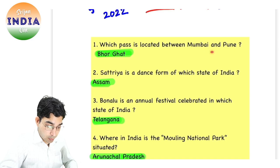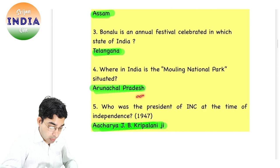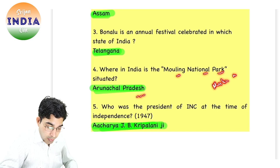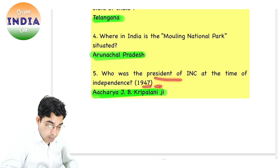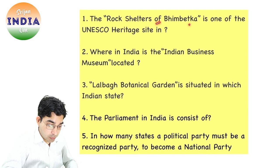Rappertji के yesterday questions के answers हैं. Mumbai and Pune के बीच में है भोर घाट. सत्रिया डांस फॉर्म है असम का. तेलंगाना का है बोनालू एन्वल फेस्टिवल. अरुणाचल प्रदेश में है मॉलिंग नेशनल पार्क. 1947 में जब आजाद हुआ इंडिया, उस टाइम पर President of Indian National Congress थे आचार्य जेबी कृपलानी जी. So ये answers हैं yesterday's questions.